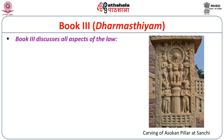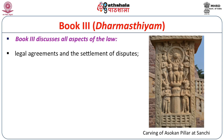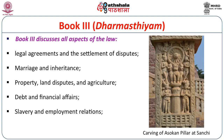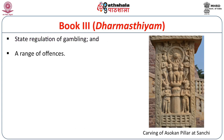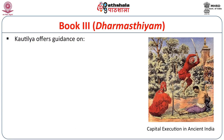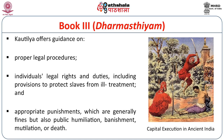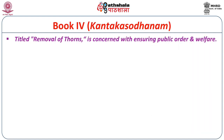Book 3 discusses all aspects of law, legal agreements and settlement of disputes, marriage and inheritance, property, land disputes and agriculture, debt and financial matters, slavery and employment relations, theft, defamation, assault, state regulation, and a range of offenses. Courts of law offer guidance on proper legal procedures, individuals' legal rights and duties, including provisions to protect slaves from ill-treatment, and appropriate punishments, which are generally fines but also public humiliation, banishment, mutilation and death. Book 4, entitled Kantakashodhanam, means 'removal of thorns.'